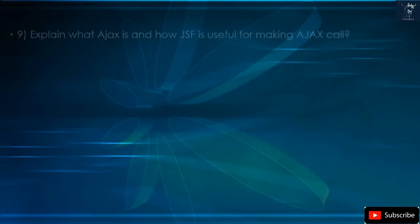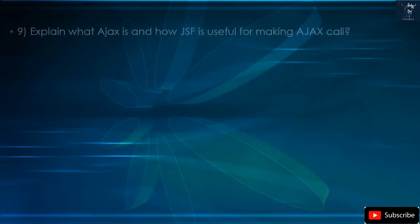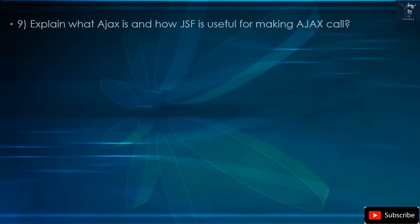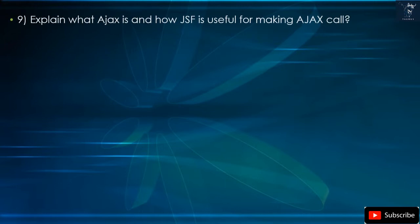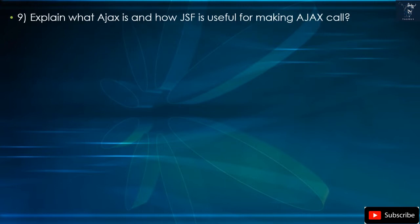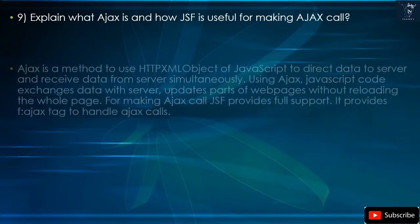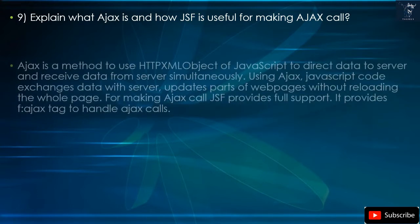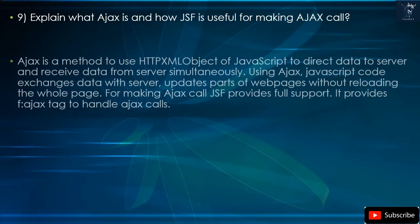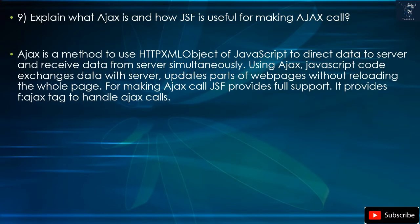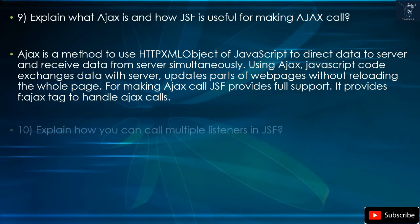Question 9: Explain what Ajax is and how JSF is useful for making Ajax calls. Ajax is a method that uses the HTTP XMLHttpRequest object of JavaScript to send data to a server and receive data from the server simultaneously. Using Ajax, JavaScript code exchanges data with the server and updates parts of web pages without reloading the whole page. For making Ajax calls, JSF provides full support via the f:ajax tag.